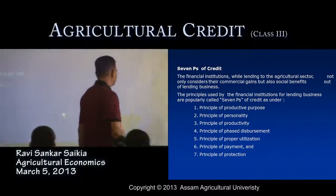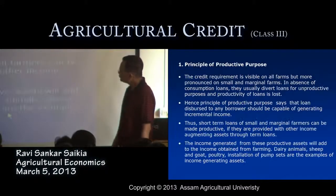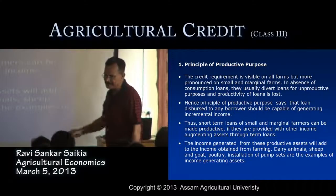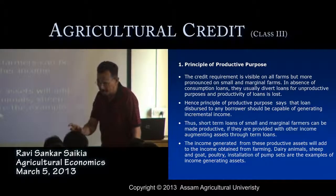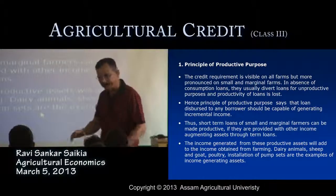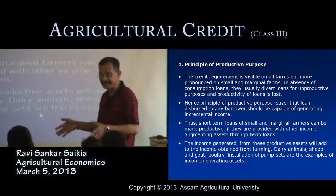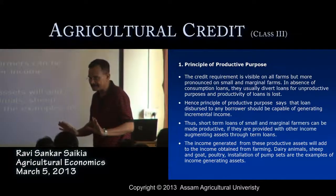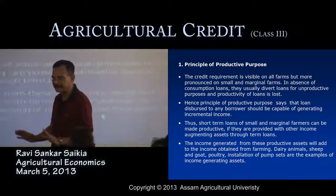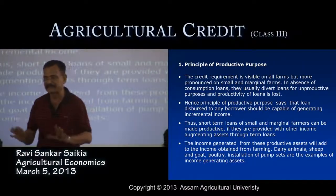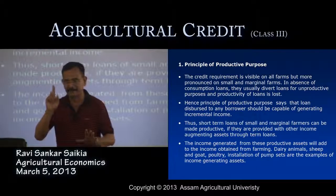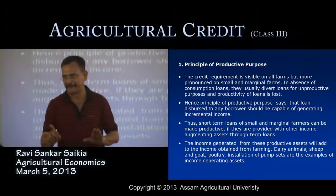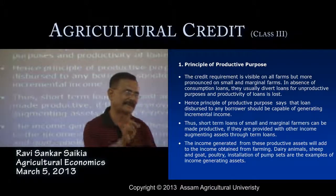The principle of productive purposes: credit requirements are visible to all types of farmers but are most significant for marginal and small farmers. In the absence of consumption loans, marginal small farmers try to divert some amount of credit as a consumption loan to meet their day-to-day cash requirements. The banking organization now also looks at giving some amount of loan that farmers may use for consumption to maintain daily life.